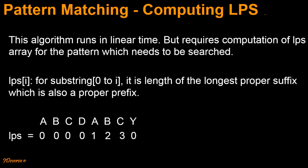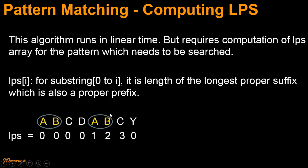Let's try to understand this definition using an example. Say we are given this pattern and we want to find out the LPS array for it. If you want to find out LPS of index 6, we consider the substring 'abcdabc' because c has index 6. LPS of 6 is 3 because 'abc' is a proper suffix and also a proper prefix — they are equal and the length is 3. Similarly, LPS of 5 would be 2 because suffix 'ab' equals prefix 'ab', and LPS of 4 would be 1. For all other remaining substrings, there is no common proper suffix and proper prefix, therefore LPS of remaining elements is 0.